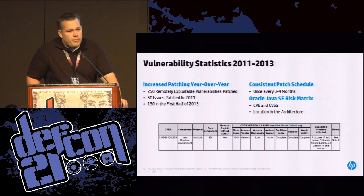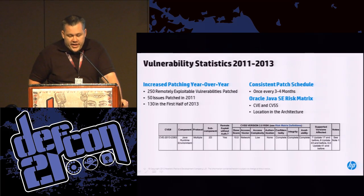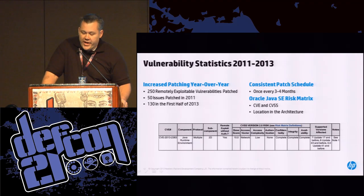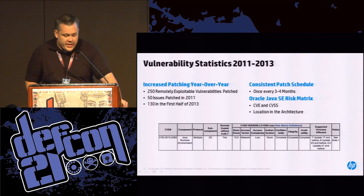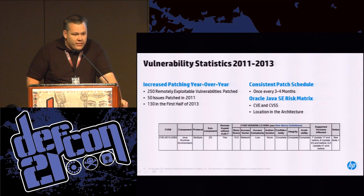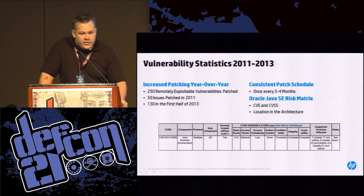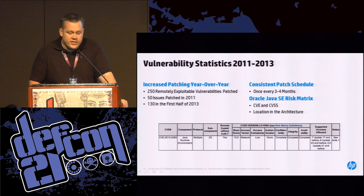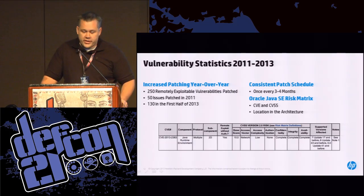When they release a patch, they actually provide quite a bit of metadata. What you see on the screen is Java's SE risk matrix — it tells application developers and people deploying the patches what they should know about the vulnerabilities. We can see a 2D component vulnerability: it is remotely exploitable without authentication, it garners a CVSS score of 10.0 — the most severe vulnerability. There's a lot of information there we can analyze to determine what the most vulnerable piece of the architecture is.